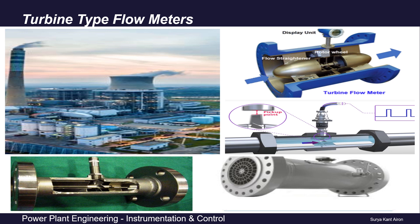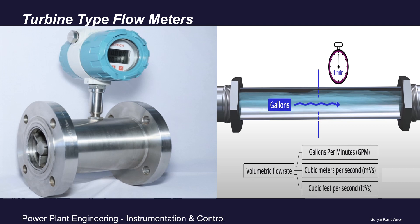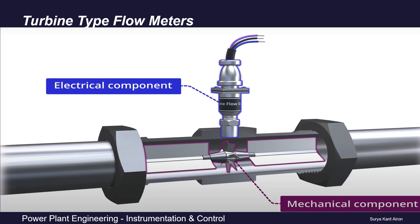A turbine tap flow meter is basically a device for measuring the volumetric flow rate of gases or liquids passing through a pipeline per unit of time. Volumetric flow rate is the volume of fluid that passes through a particular cross-section per unit time. It is generally measured in gallons per minute or cubic meters per second.